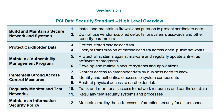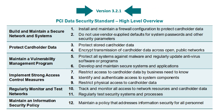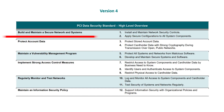Finally, Domain 6: Maintain an Information Security Policy. Within Domain 6 we have Requirement 12: Maintain a policy that addresses information security for all personnel. That was a high-level overview of the requirements for PCI DSS version 3.2.1.